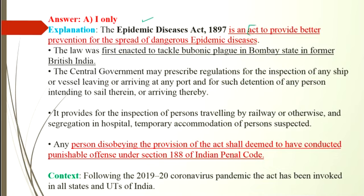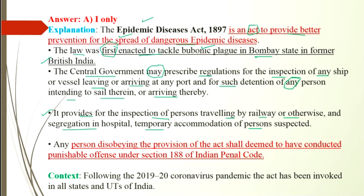The Act was made to provide better prevention for the spread of dangerous epidemic diseases. It was first enacted to tackle bubonic plague in Bombay State in former British India. The central government may prescribe regulations for inspection of any ship or vessel, detention of persons, inspection of persons travelling by railway, and segregation in hospital or temporary accommodation of suspected persons. Any person disobeying the Act shall be deemed to have committed a punishable offense under Section 188 of the Indian Penal Code. The Act has been invoked across all states of India following the outbreak of coronavirus.